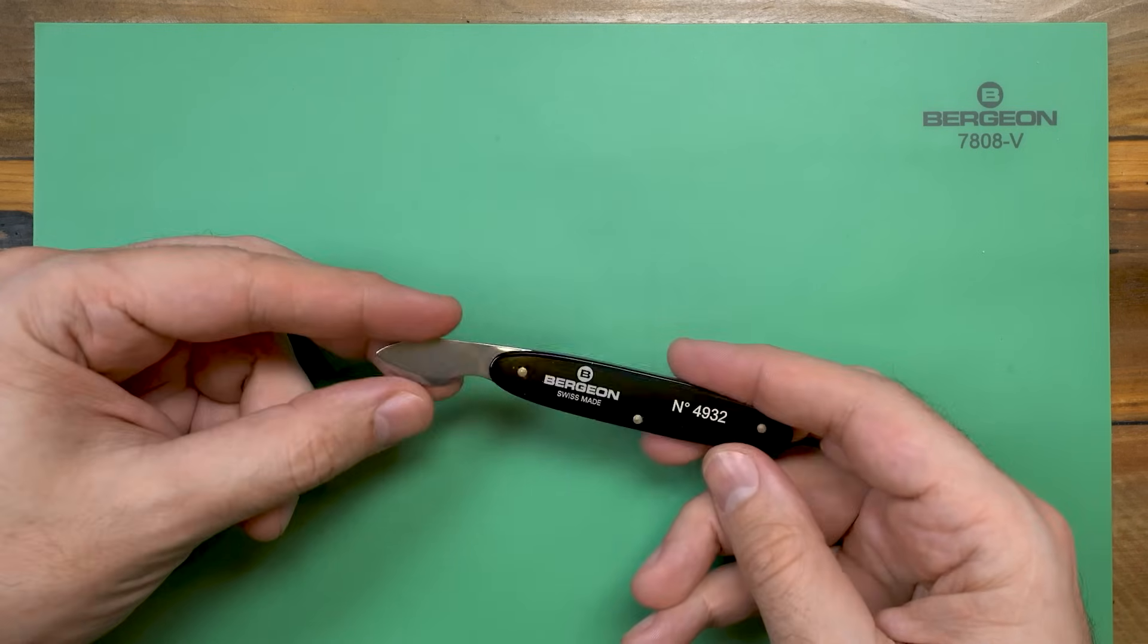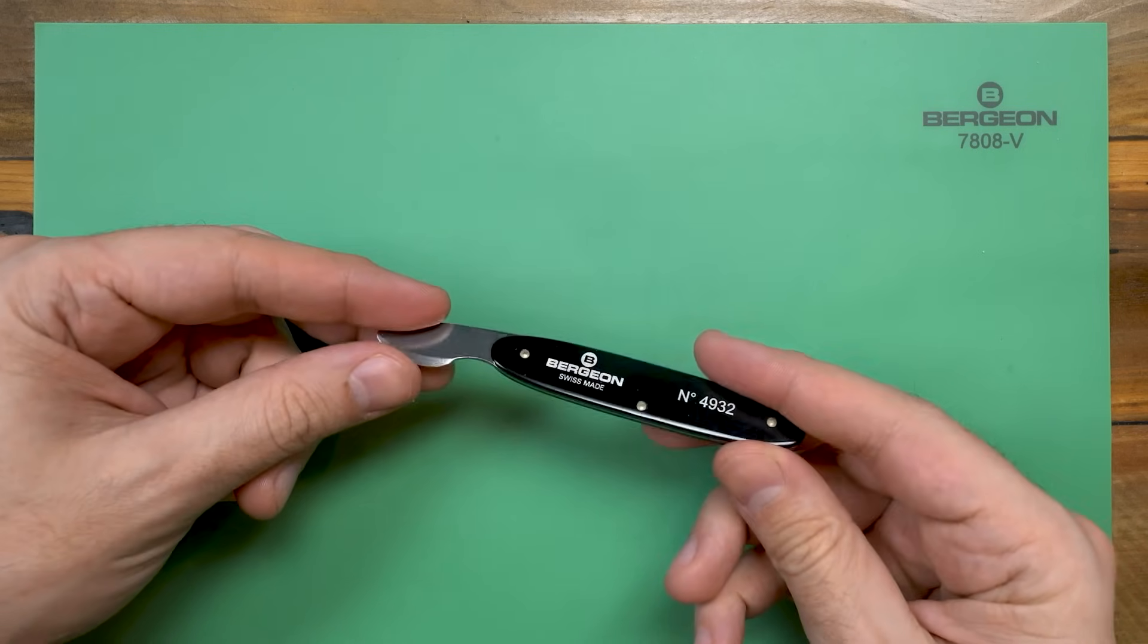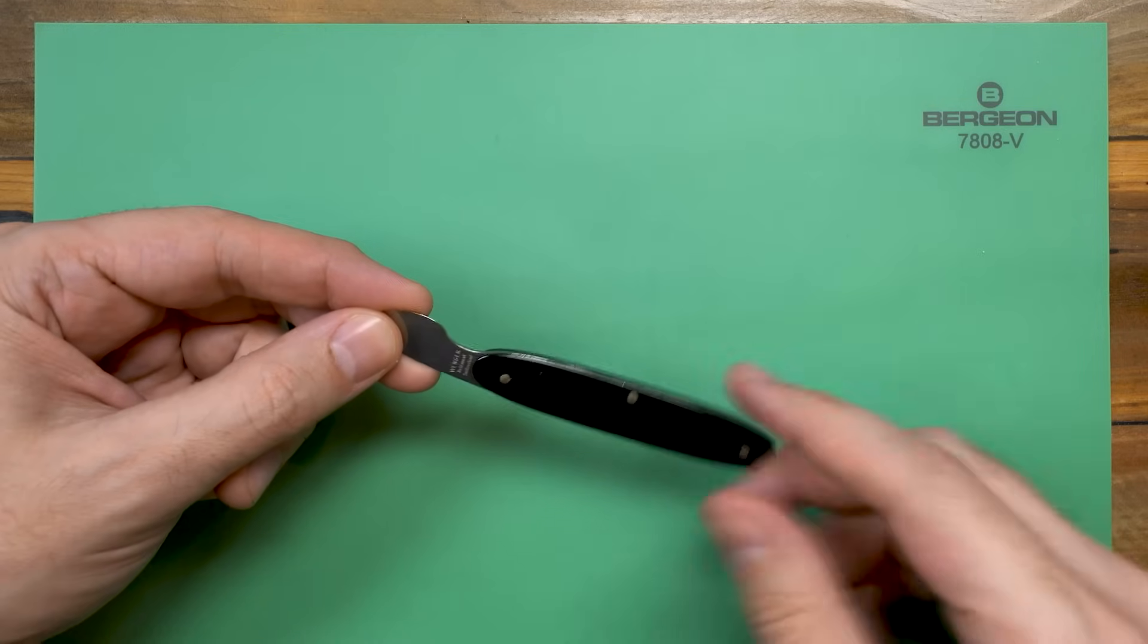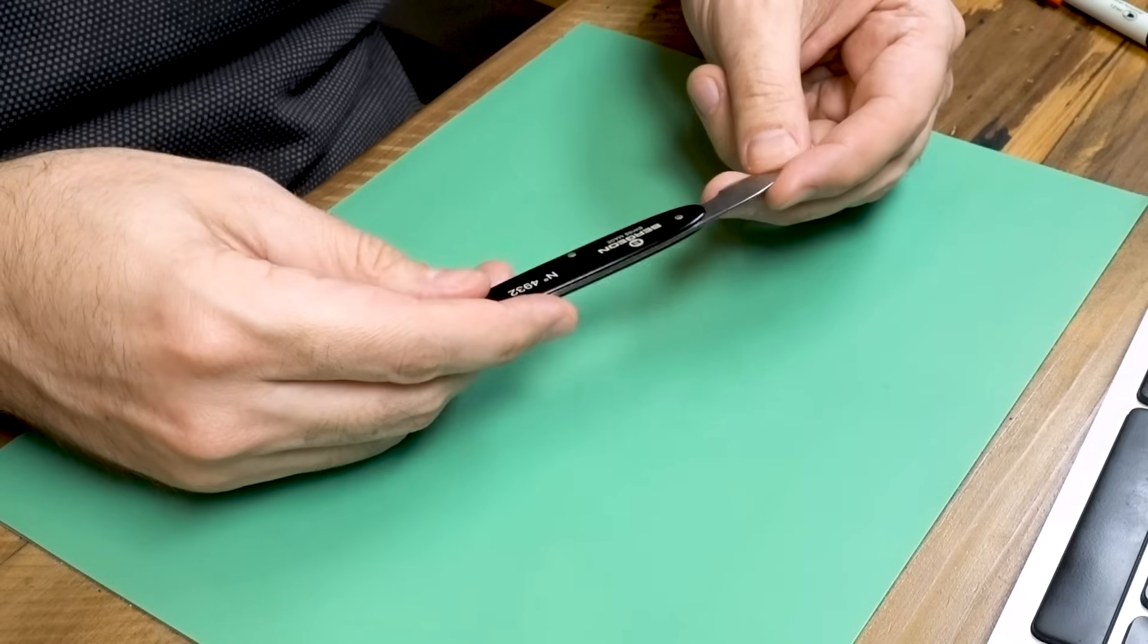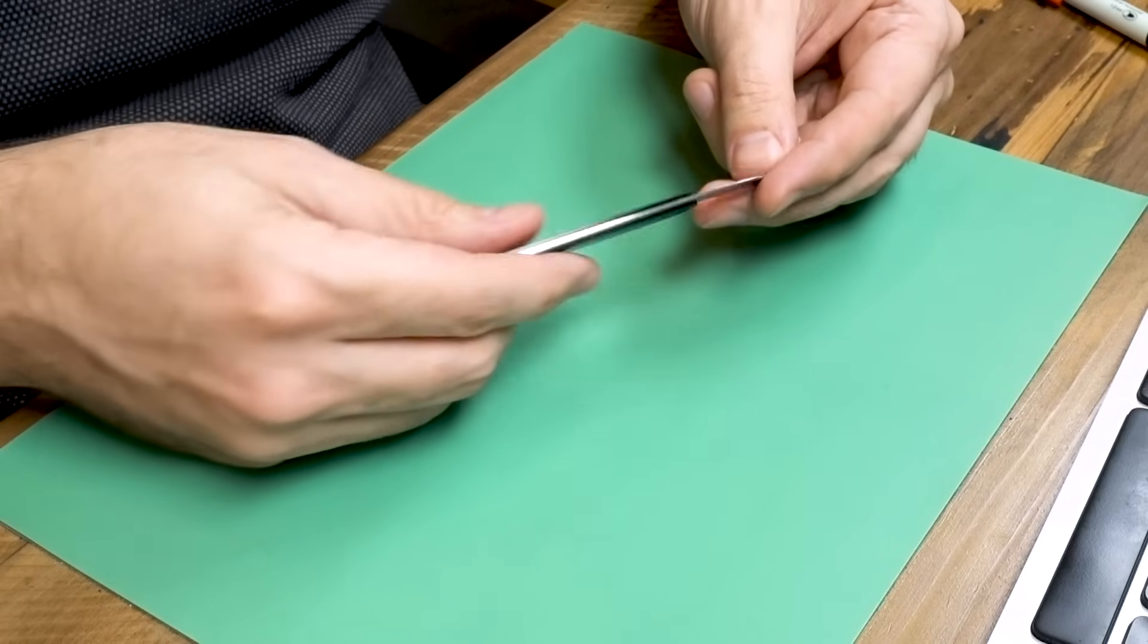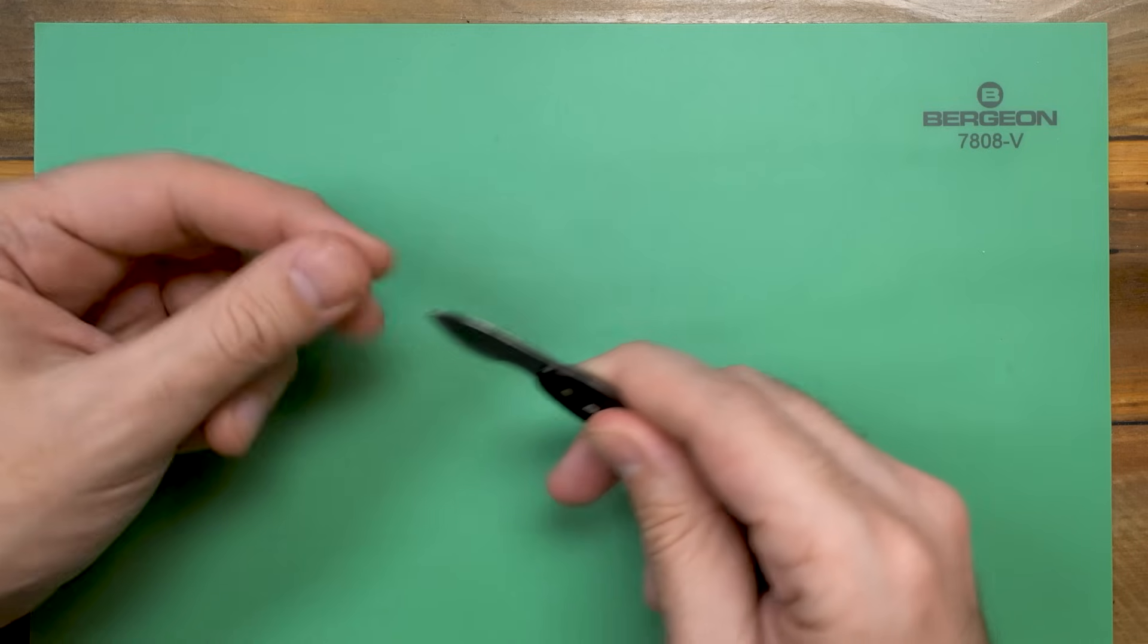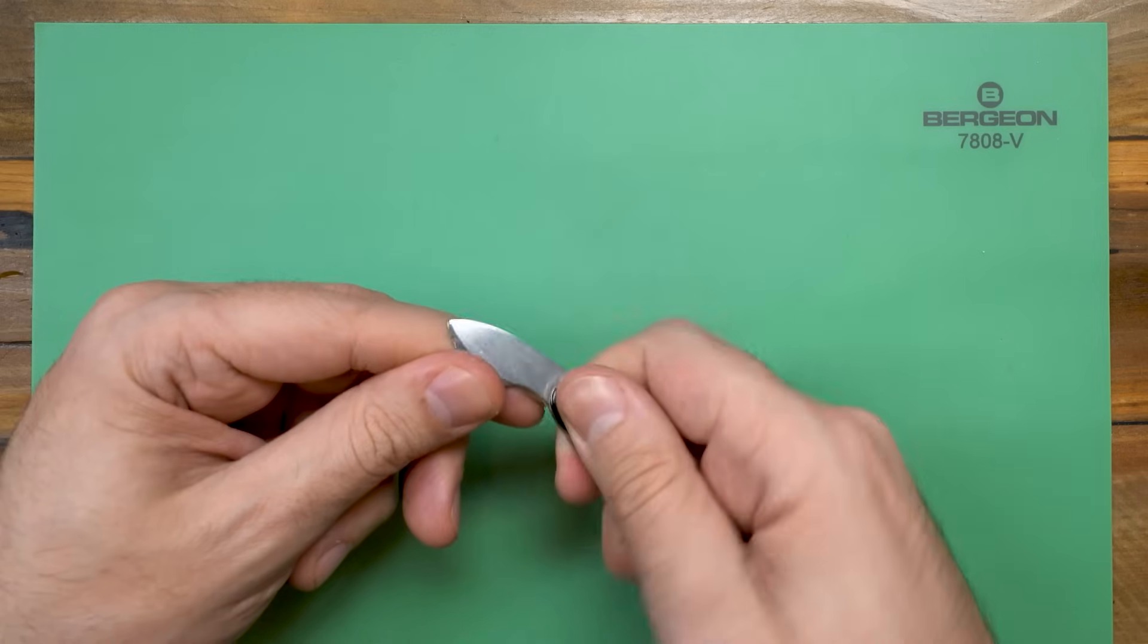Another tool that you'll need to get into certain case backs, basically the ones with snap-on backs, is a case knife. This one was made by Bergeon. It was about $30, maybe $28, something like that, and it's a simple well-made tool. Basically, it's just a flat blade that you use to pry open the back of the case.